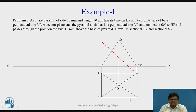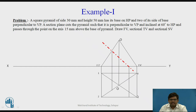The cutting plane is 15 mm above the base and inclined at 60 degrees. Let us project these points on the corresponding edges in the top view. Points O1' and O2' will be projected on O1 and O2. Similarly, the points at the base will be projected on edges 1-4 and 2-3. We name these points P, Q, R, and S — the points where the cutting plane cuts the pyramid. When we join these points, we get the required sectional top view of the pyramid.